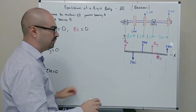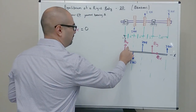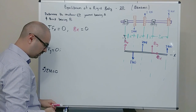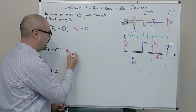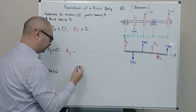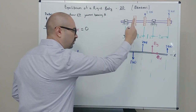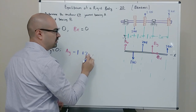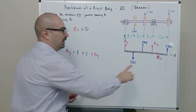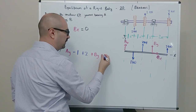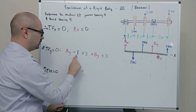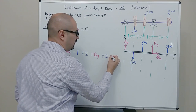Now for the Y direction, sweeping from left to right: first is the reaction AY, assumed positive pointing up. Then the 1 kilonewton pointing down, so minus one. Then 2 kilonewtons pointing up, so plus two. Then BY assumed positive, so plus BY. And the last force is the 3 kilonewtons pointing up, so plus three. The sum of all these forces must equal zero: AY minus 1 plus 2 plus BY plus 3 = 0.